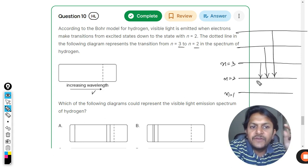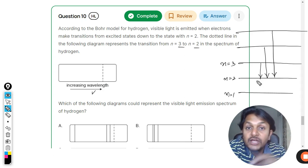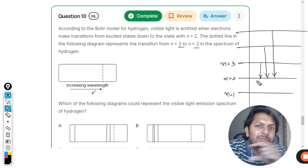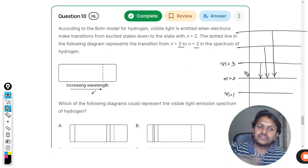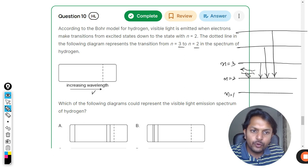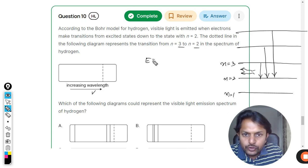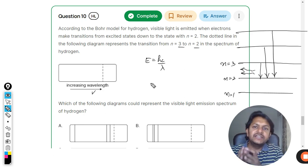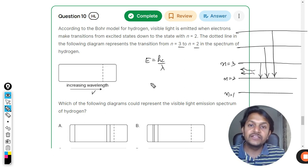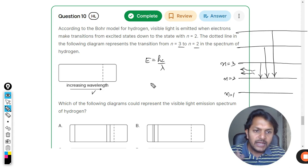We can clearly see that when the electron makes a transition from n equals three to n equals two, the energy gap is minimum. A photon is released during this transition, and the energy of a photon is given by hc by lambda. If the energy is less, it means the wavelength will be more.